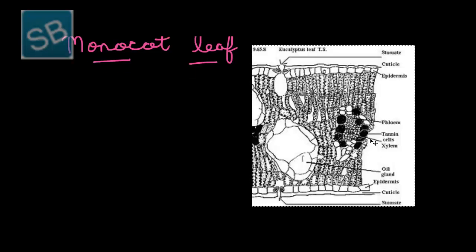Now we will look at the anatomy of the monocot leaf. This figure depicts the anatomy of the grass leaf, which is monocot in nature. The anatomy of a bilateral dorsiventral dicot leaf is similar to that of the monocot leaf, which is isobilateral in nature. However, it possesses a few dissimilarities or differences.